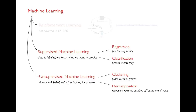In unsupervised learning we might cluster our data, placing rows into different groups. Or we might decompose our rows — noticing that rows with five numbers might each be a combination of two component rows, so there's simplicity hidden in the data even if there are many columns.